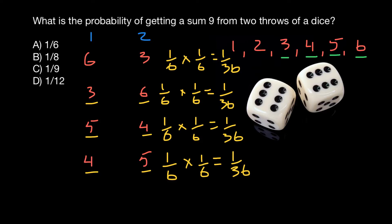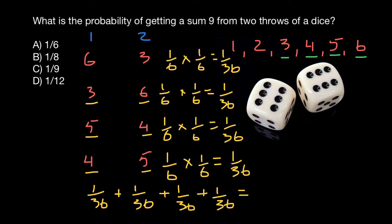With the last step, we just have to add all four probabilities: one over 36 plus one over 36 plus one over 36 plus one over 36. We get four over 36. We can reduce by four, so we get one over nine. And as you see, this is answer C.